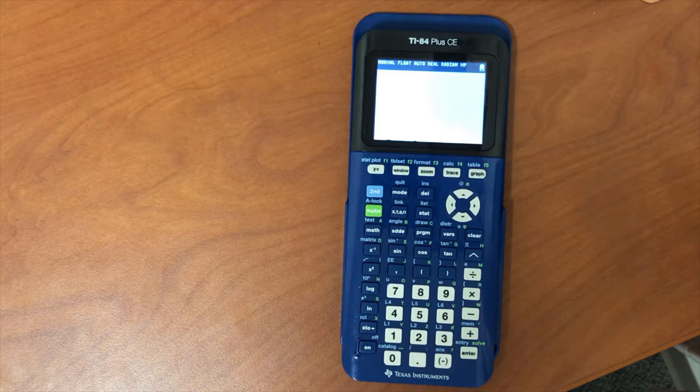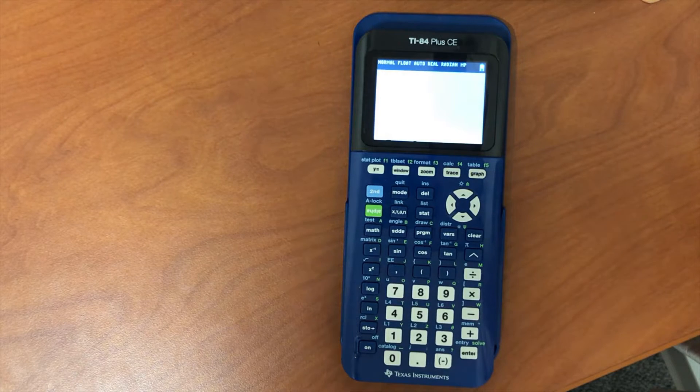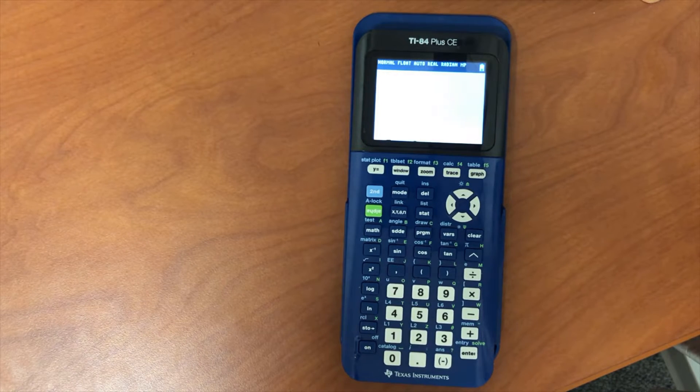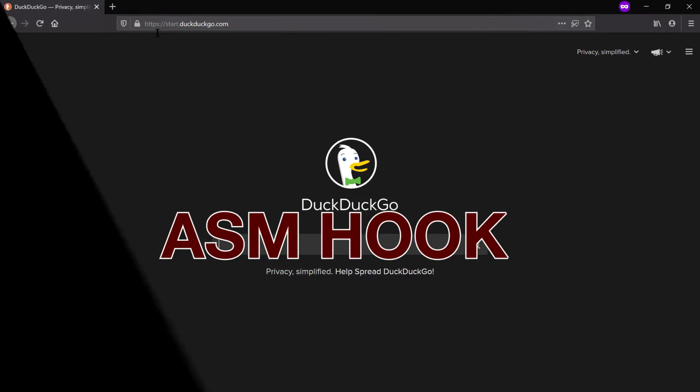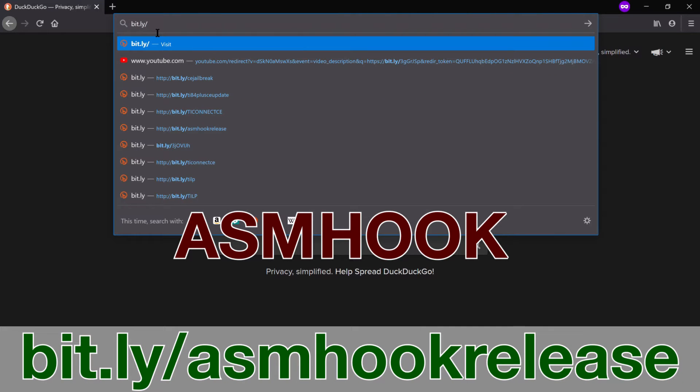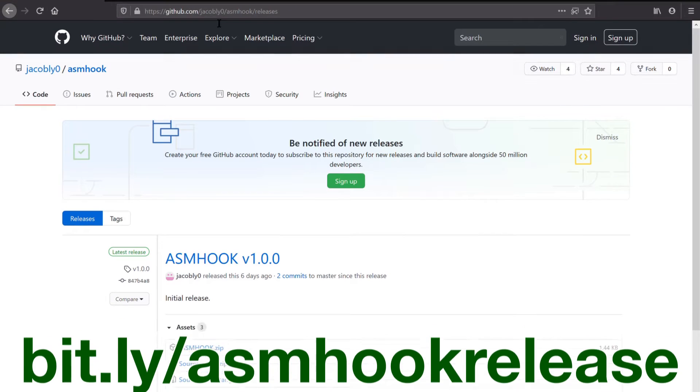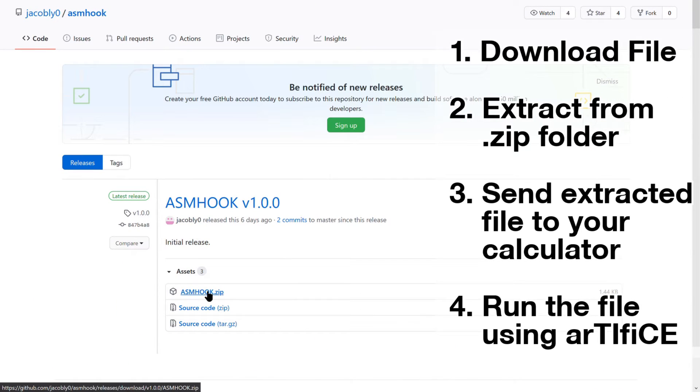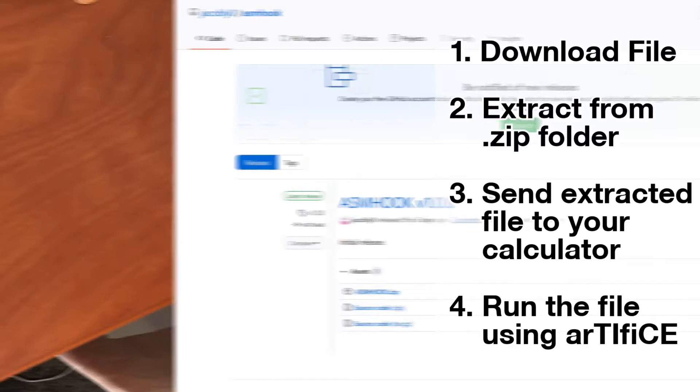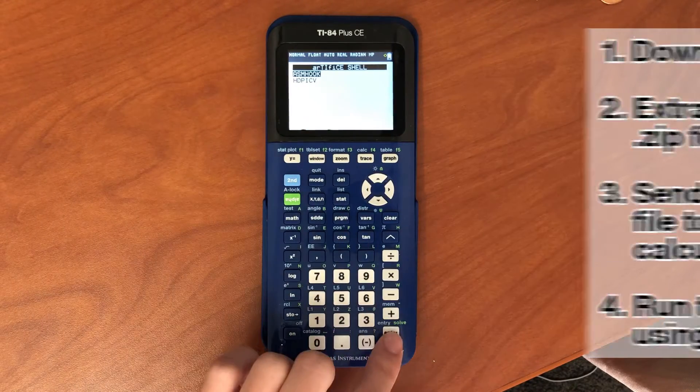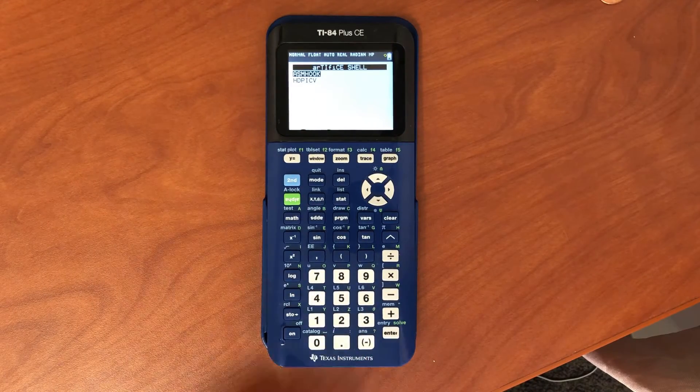First is a small program that will simply allow you to run assembly programs directly from the program menu again. It's called ASM Hook and you can get it by going to bit.ly/asmhookrelease. Download the file, extract it from the zip folder, and send the file to your calculator. Finally, run it with Artifice.